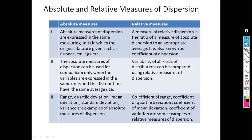After that, we saw the definitions of absolute and relative measure of dispersion. Absolute measures of dispersion are expressed in the same measuring units in which the original data are given. In relative measure of dispersion, it is the ratio of the measure of absolute dispersion to the appropriate average.